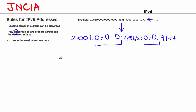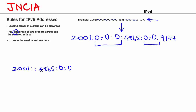So you can write this address in two different ways. The first way: 2001, and then we replace the first group of three zeros with double colon, so double colon and then you write the rest of it — 48B5, 0, 0. Remember you've done it once so you can't do it one more time. Then 9177. That's the first way of writing it.